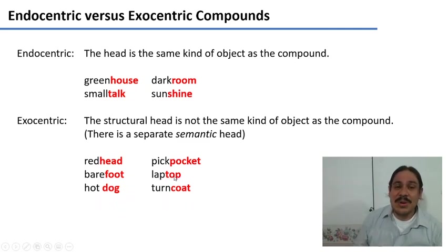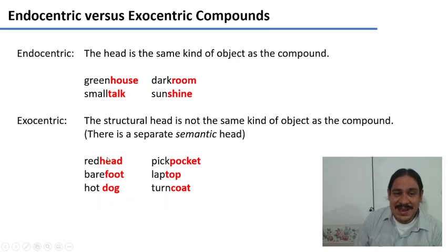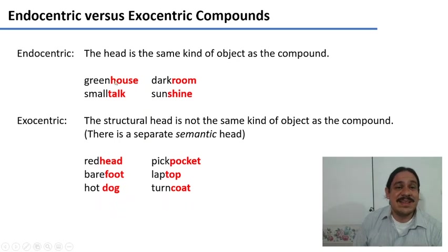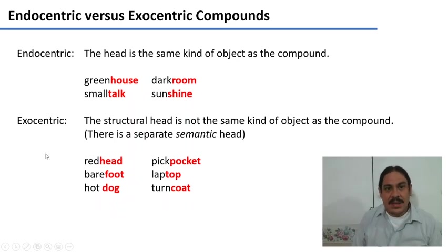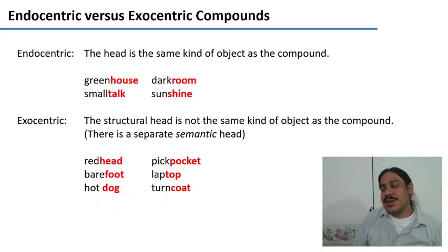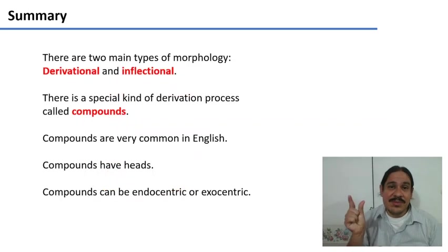We'll study more about this in semantics, but there must be some third meaning floating around in your brain that tells you a redhead refers to a kind of person. What I want you to know is that sometimes the head refers to the same structure as the whole compound, and sometimes it doesn't. By the way, compounds are extremely common in English, but not as common in every language — for example, in Spanish it's very difficult to find a compound structure with two words just stuck together.